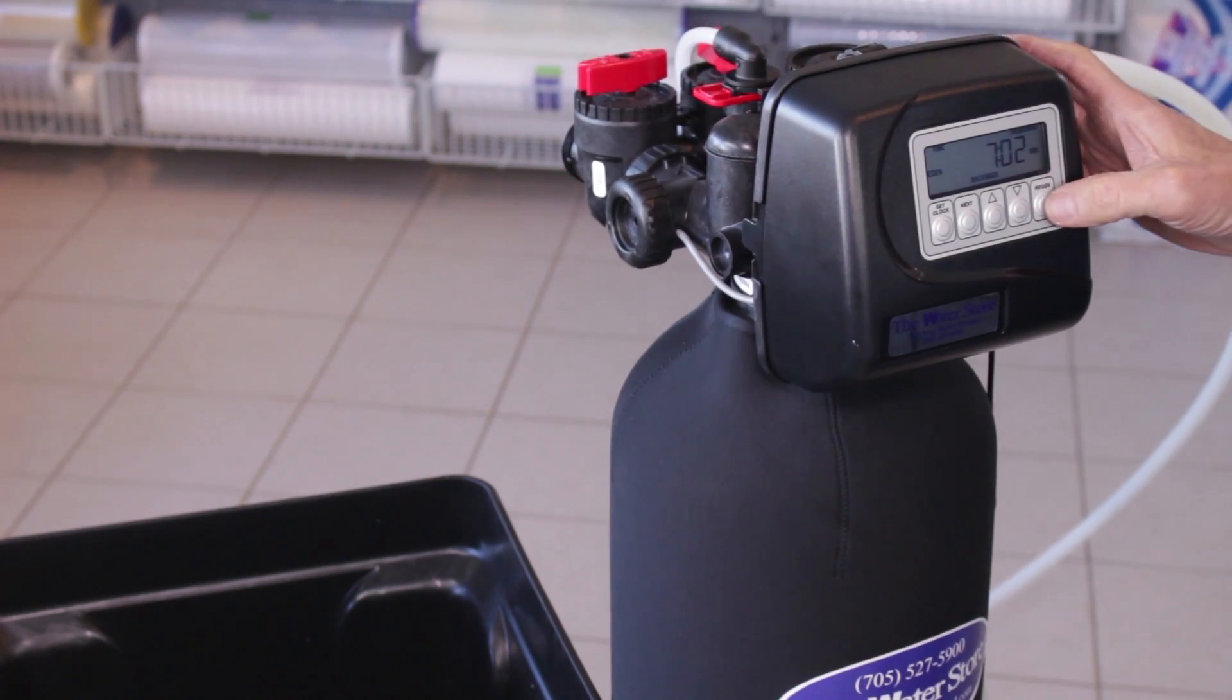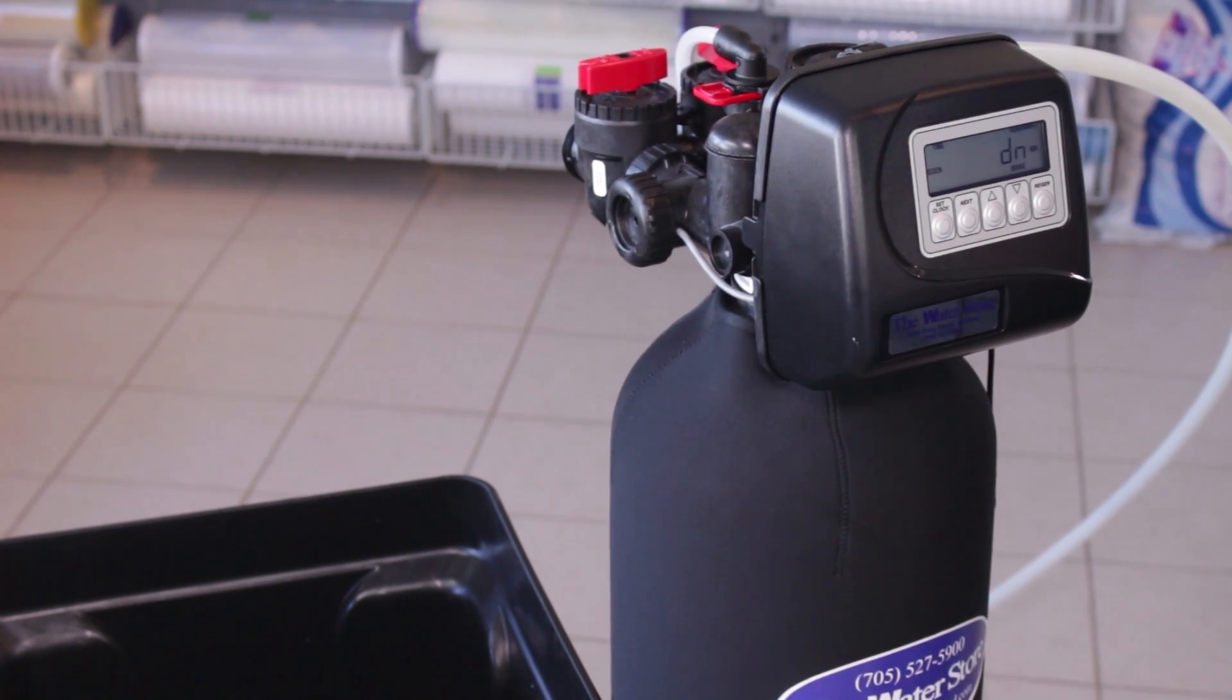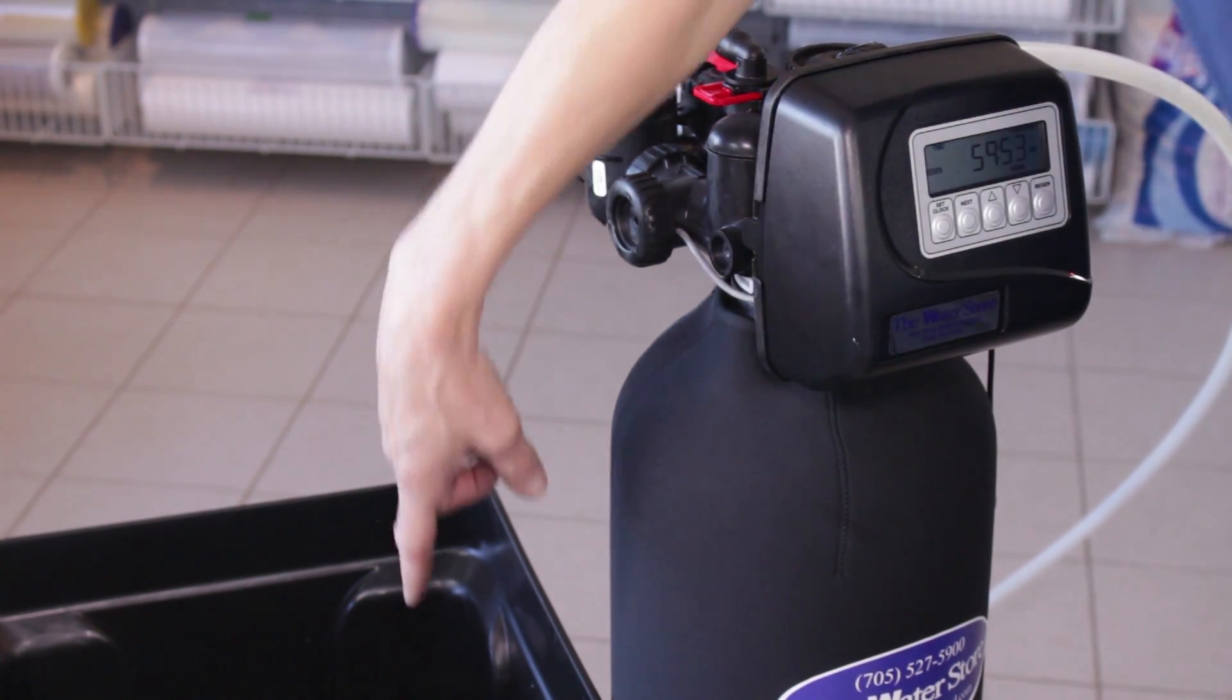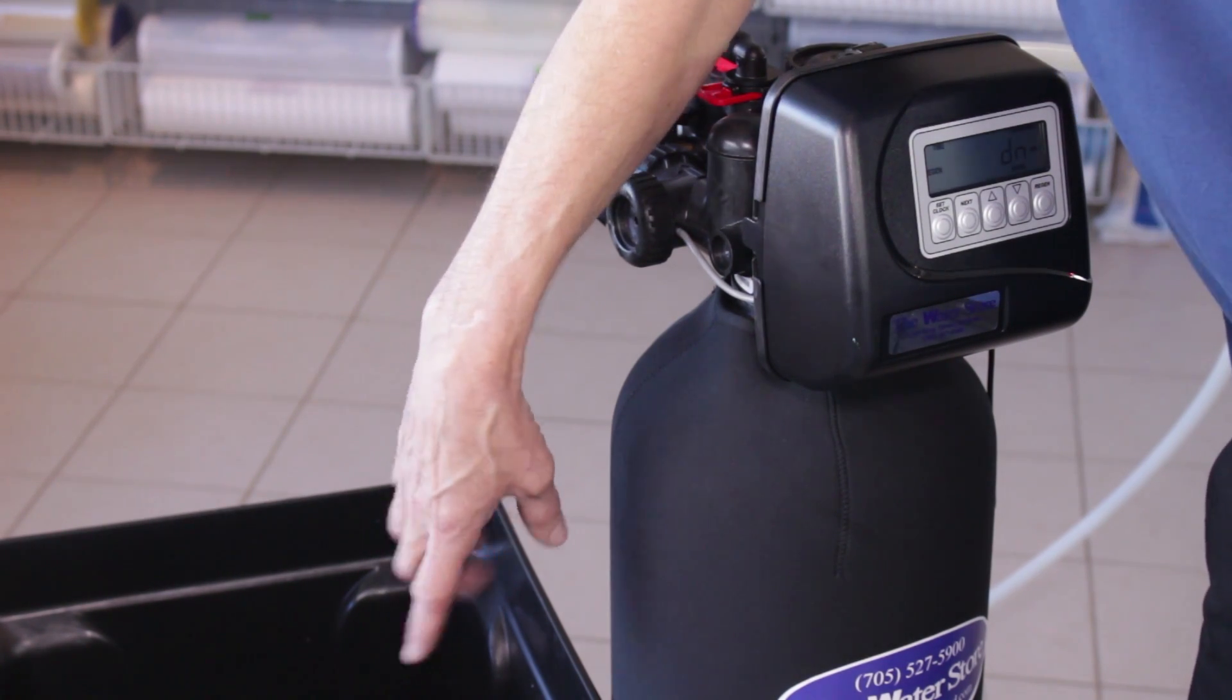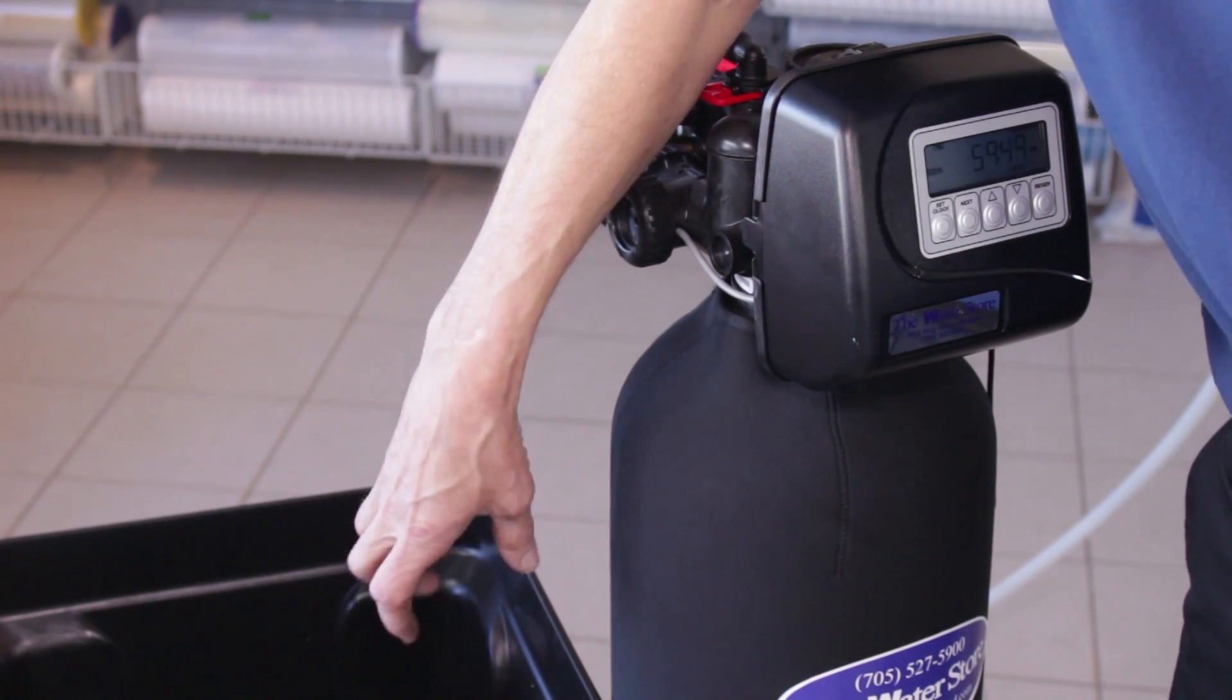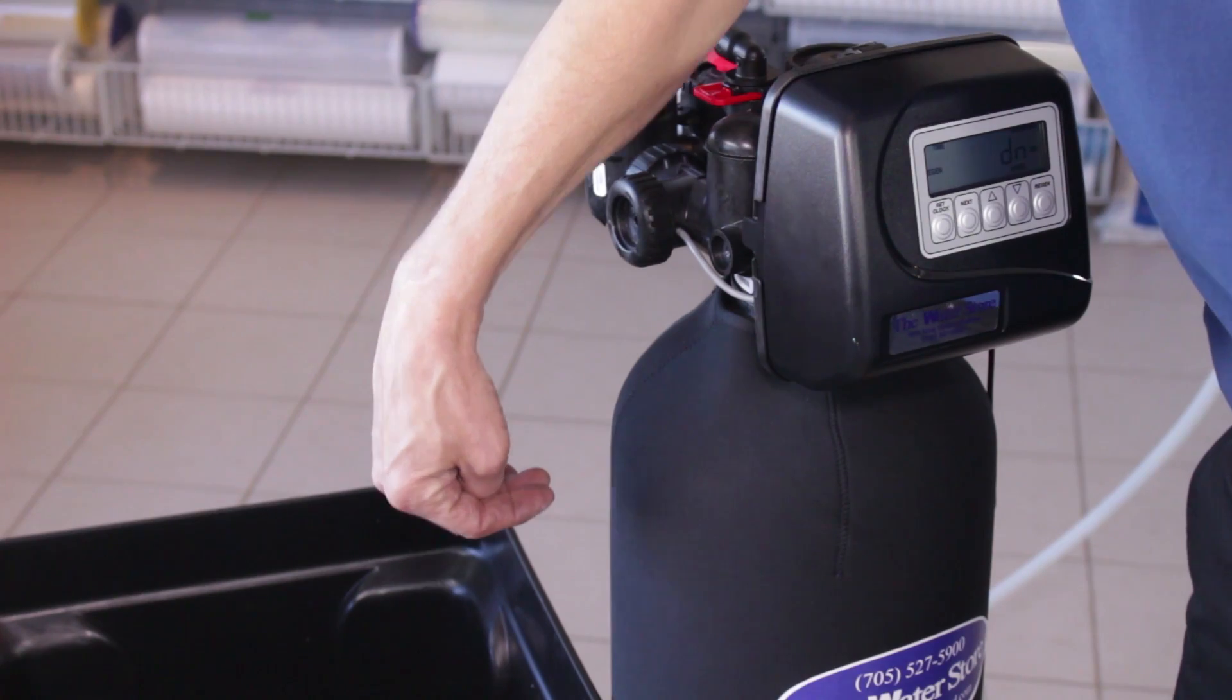So now what we would do is press regen again. Now it's in the brine cycle so there'll be water flowing to drain but much more slowly than when it was in the backwash cycle. So now you'd look inside the brine tank where the water is and you should see the water slowly dropping.